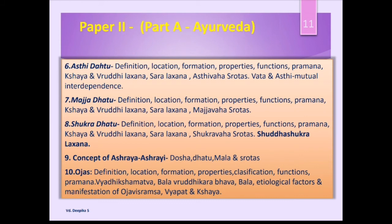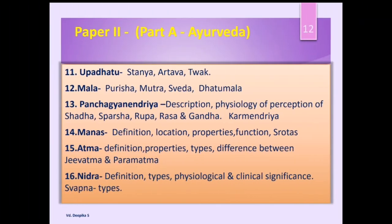After learning dhatu, we will cover the concept of Ashraya-Ashrayi Sambandha, followed by the concept of Ojas — that is, immunity according to Ayurveda — and Balavridhikara Bhavas. Then we will study Upadhatus (secondary tissues), the concept of Mala, Panchagnanendriyas and their descriptions, and Manas — its location, nature, and functions. We will also study the description of Atma, the difference between Jivatma and Paramatma, and the concepts of Nidra (sleep) and Svapna (dream).